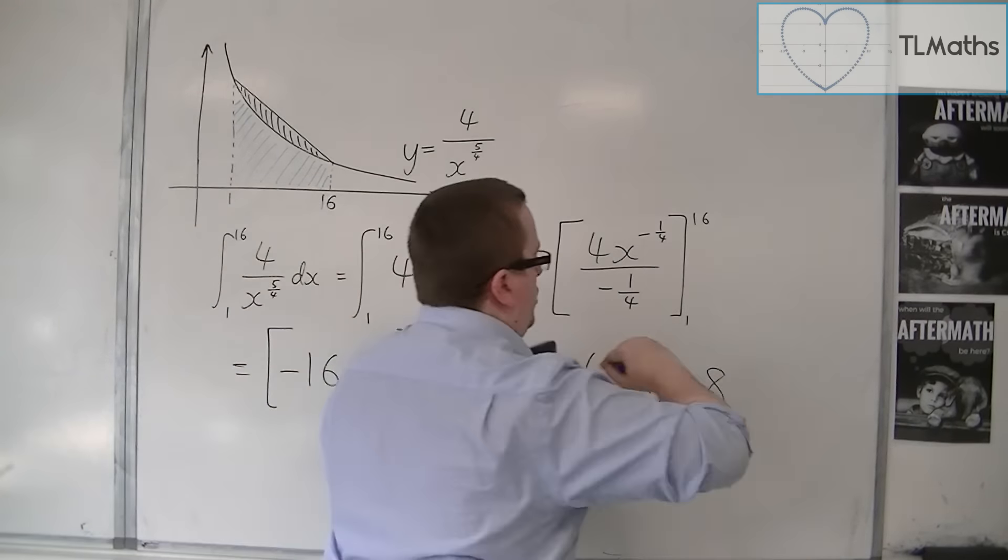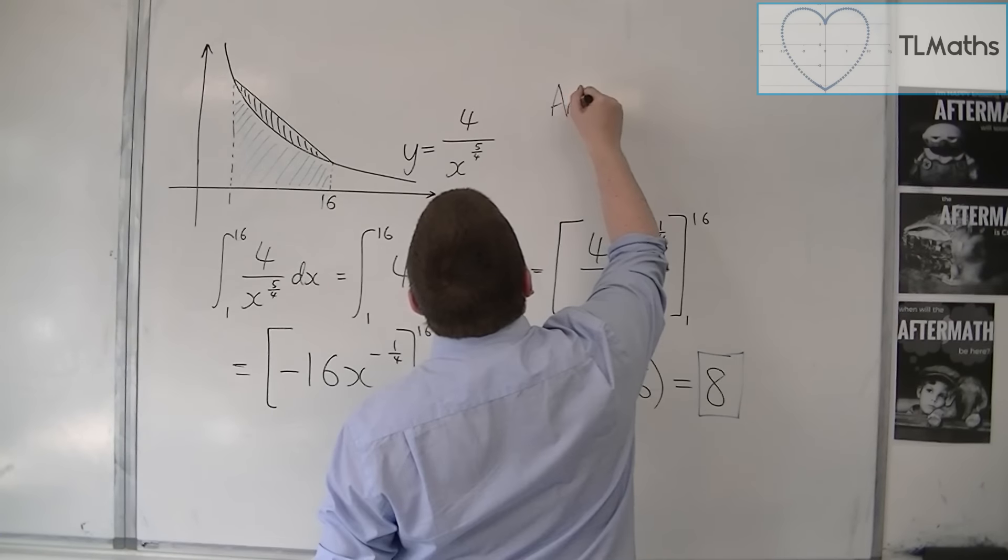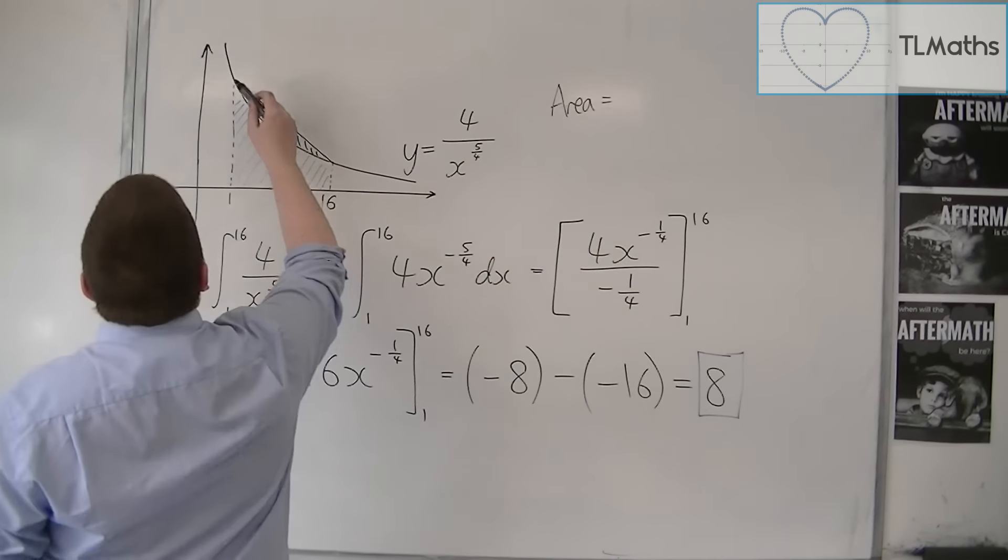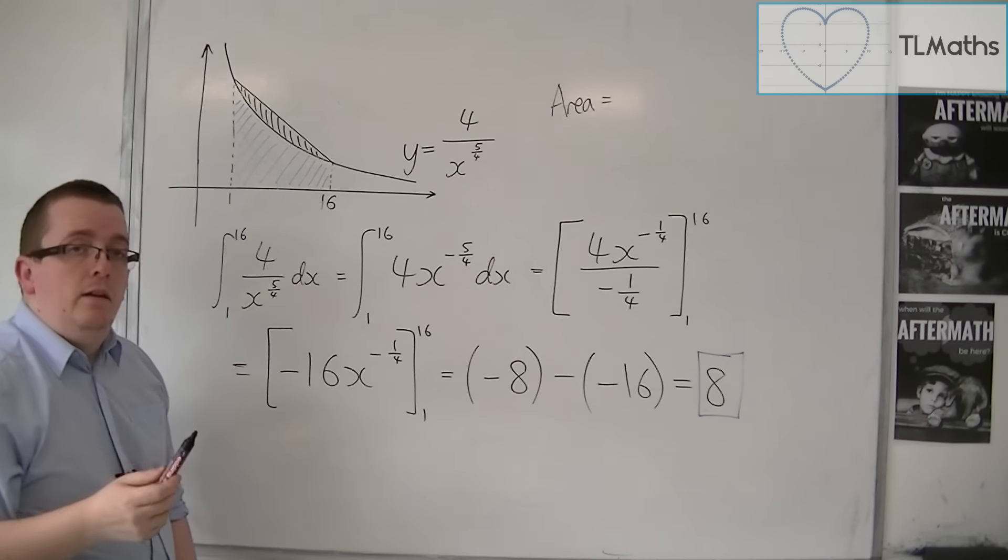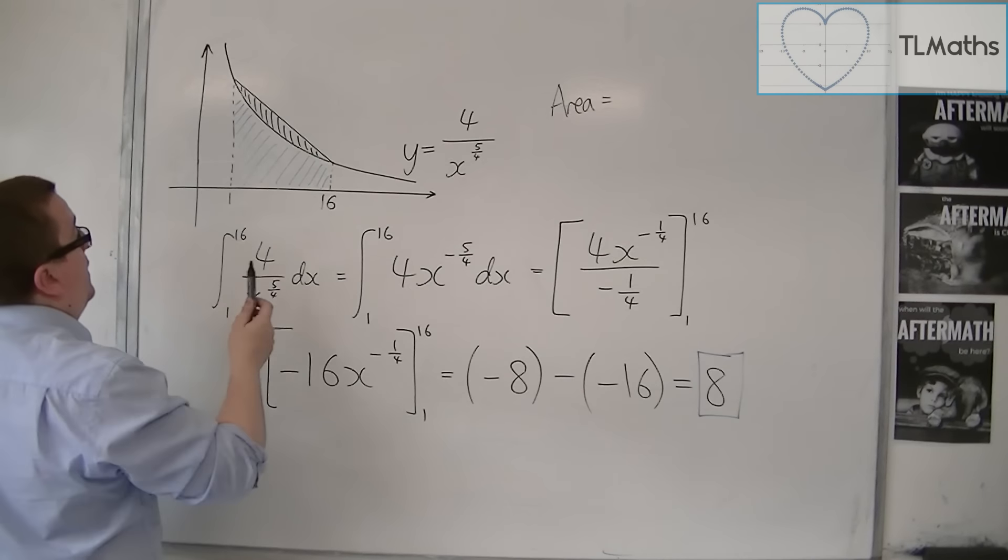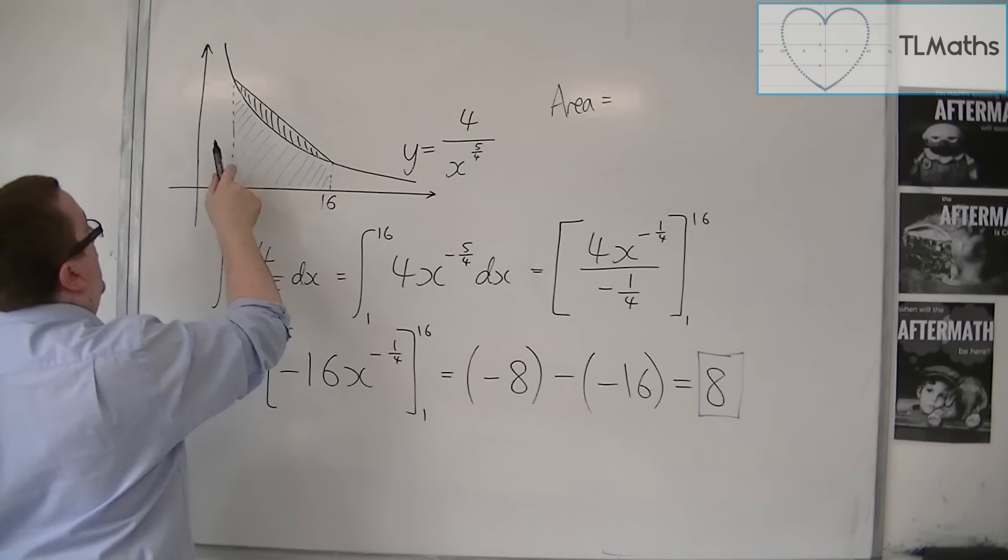OK, so now I want to find the area of that trapezium. The area of the trapezium take away 8 will give me the area that I want. But in order to find the area of the trapezium, I need to know the heights of these two sides.